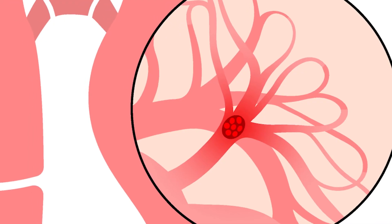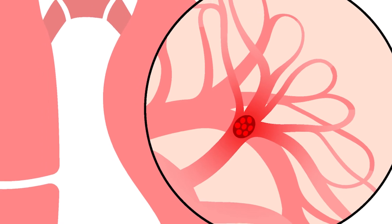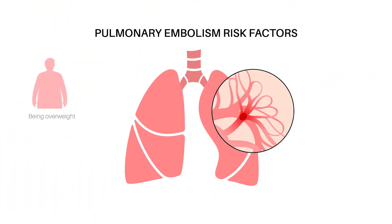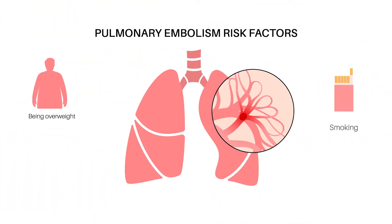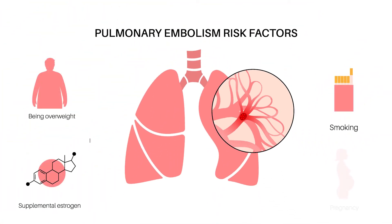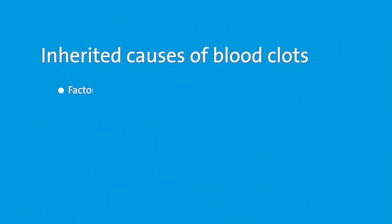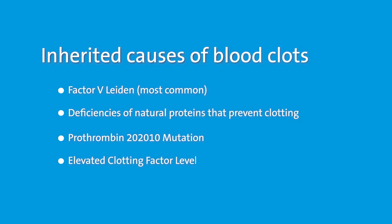Some of the risk factors which would predispose one to developing a blood clot involve obesity, smoking, loss of physical activity, an injury to the arteries or veins in one of the extremities. It can also be hereditary in terms of a pro-blood clotting condition.